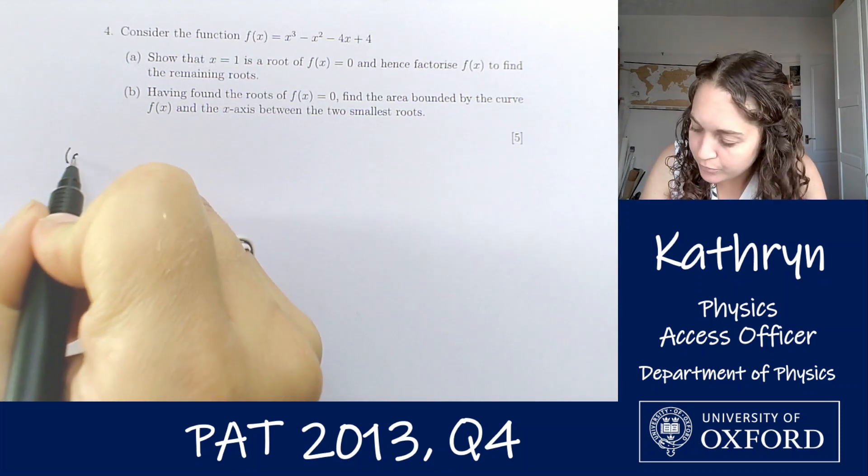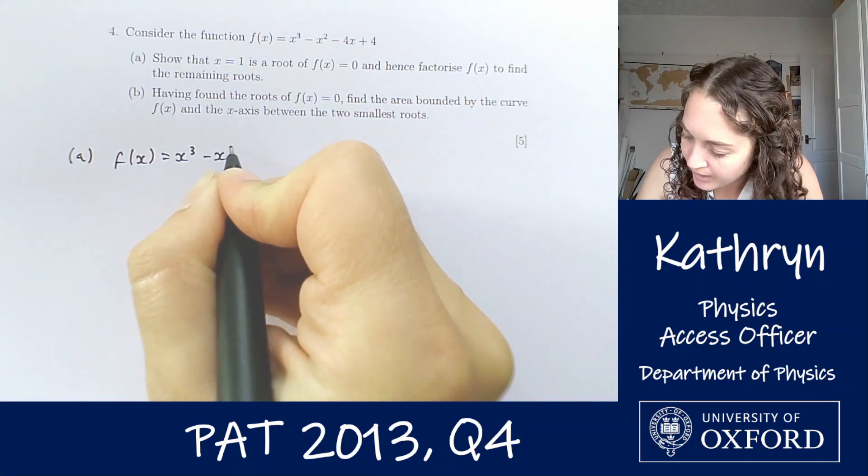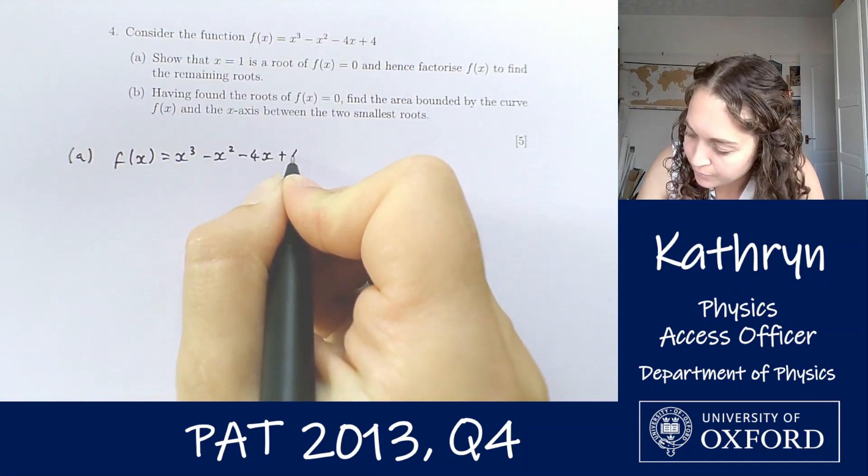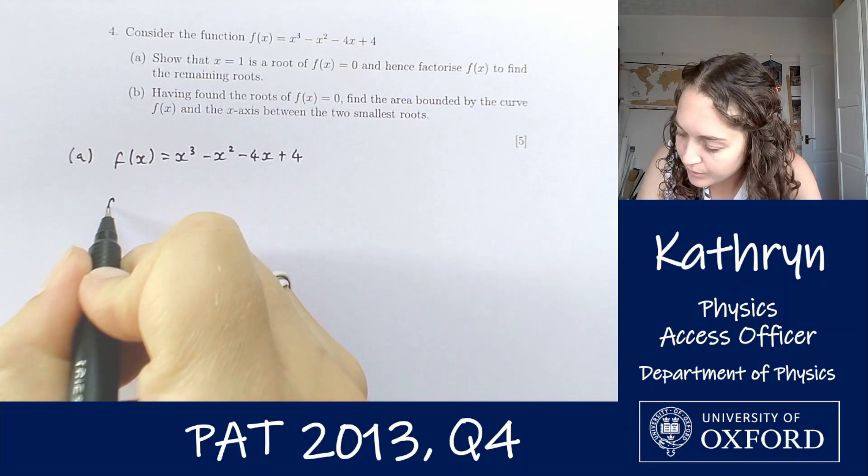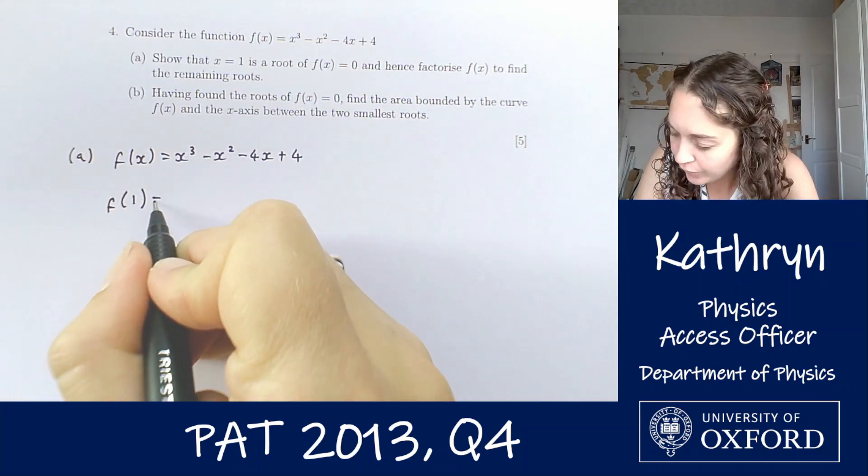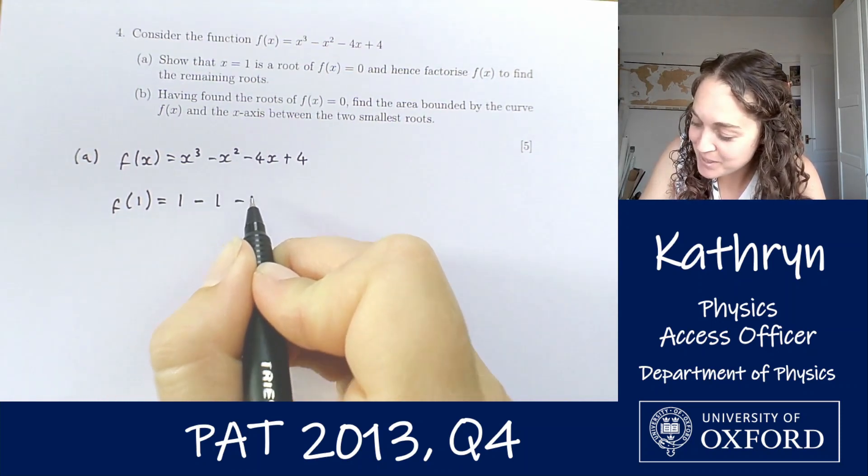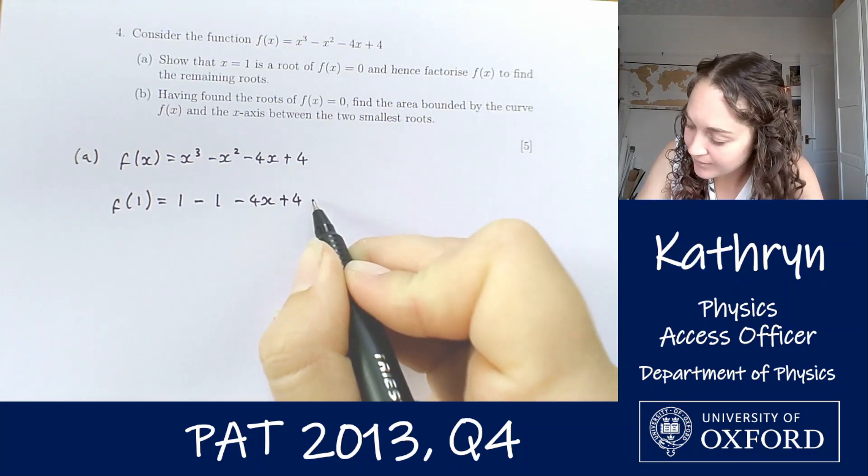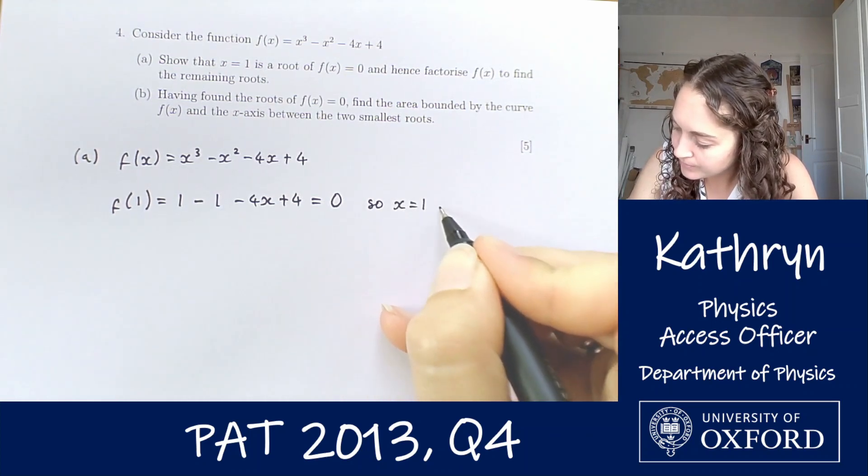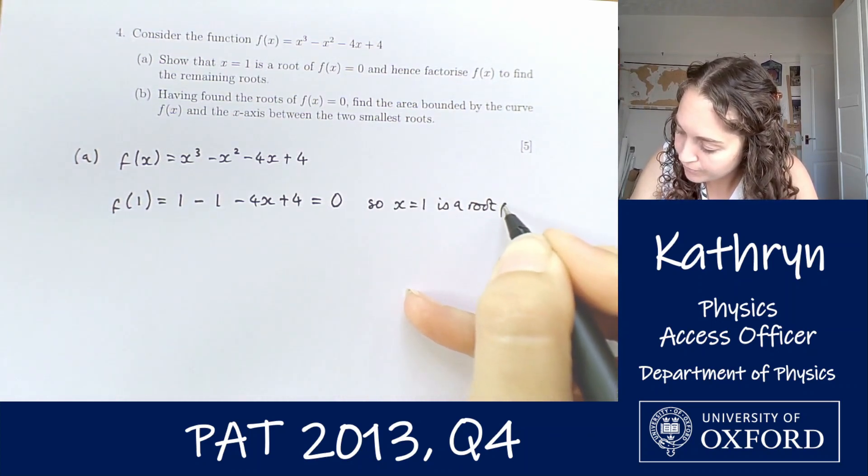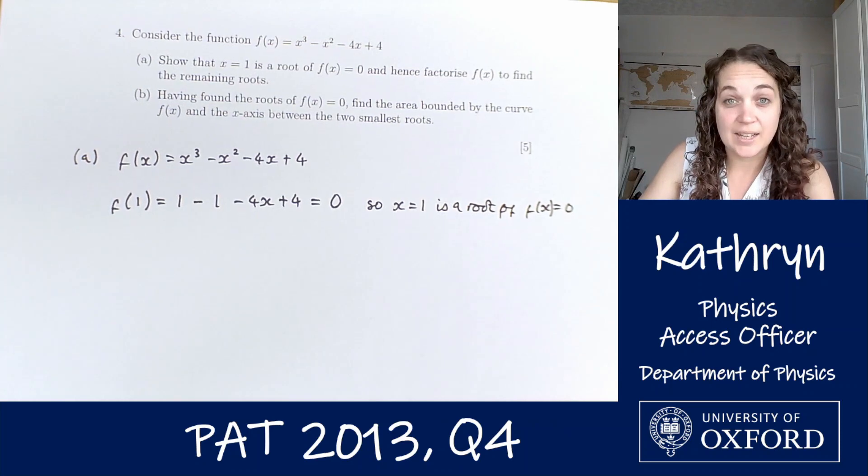So we've got our function f(x) equals x cubed minus x squared minus 4x plus 4. If we want to show that x equals 1 is a root, we need to substitute that in. So we're going to find f(1). So 1 cubed is 1 minus 1 squared is 1 minus 4 plus 4 and that equals 0 fairly straightforwardly. So x equals 1 is a root of f(x) equals 0, which is exactly what it was looking for.